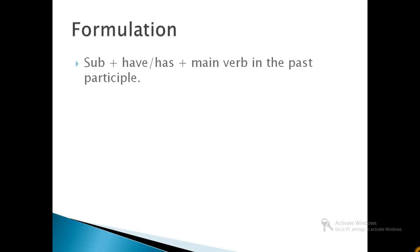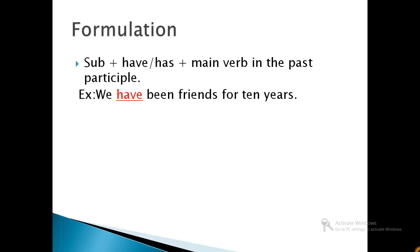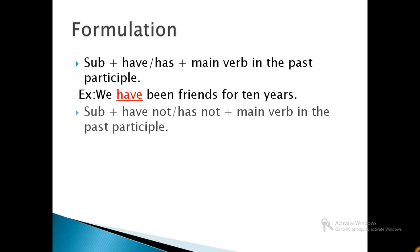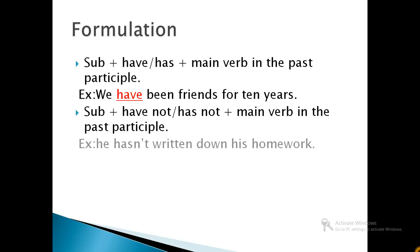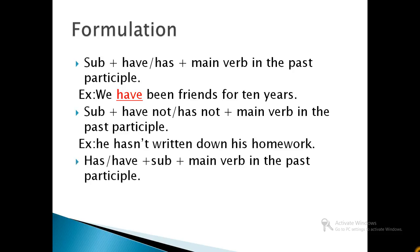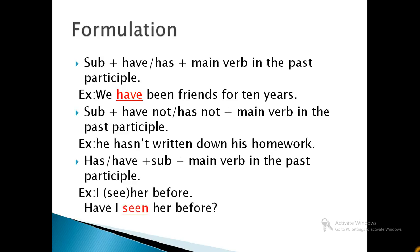Formulation of present perfect tense. For positive statements, we use subject plus have or has plus main verb in the past participle. For example, we have been friends for 10 years. For negative sentences, we use subject plus have not or has not plus main verb in the past participle. For example, he hasn't written down his homework. For questions, we use has or have plus subject plus main verb in the past participle. For example, have I seen her before?